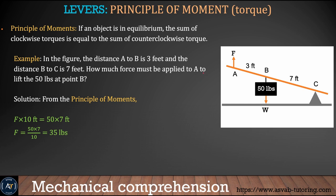Here is an example problem. A 50-pound load is applied at point B. The distance from C to B is 7 feet and B to the fulcrum is 3 feet. You need to find how much force to apply to reach equilibrium. So F times 10 feet (7 plus 3) equals 50 times 7, which gives you F equals 35 pounds. That means you only need 35 pounds to lift a 50-pound load using the fulcrum — that's the mechanical advantage of the lever.